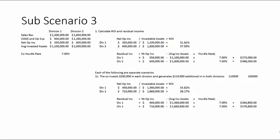The third scenario: the company decides to invest $260,000 in each division, generating an additional $110,000 of net operating income. For Division 1 we take the original $350,000 and add $110,000. The investable assets also go up, so $1.1 million needs $260,000 added. Using the new net operating income and new investable assets, we get a new ROI of 33.82 percent for Division 1.